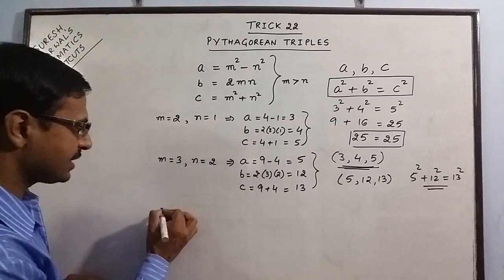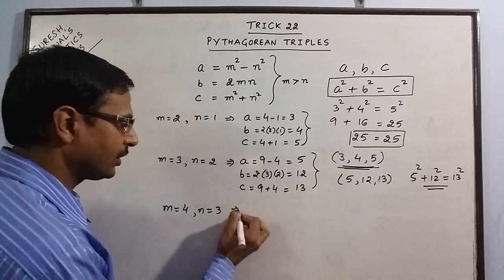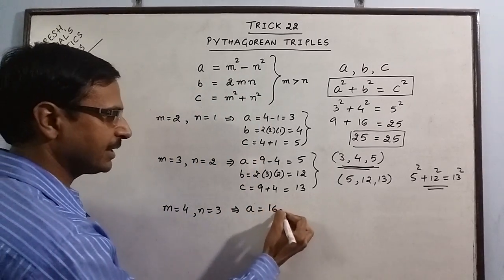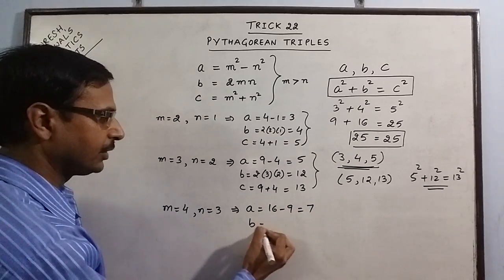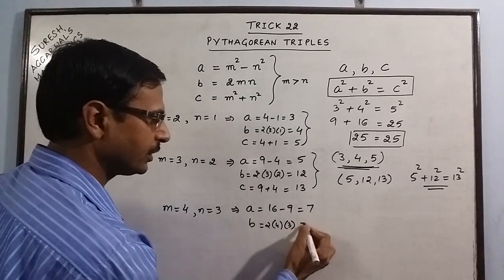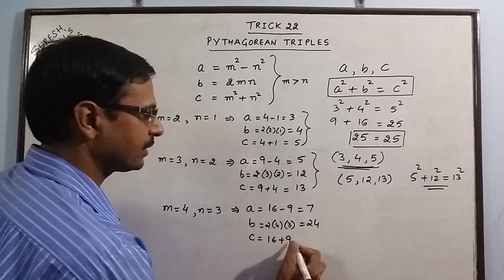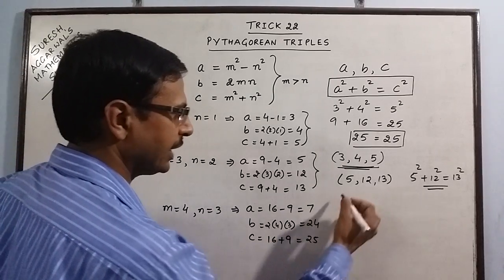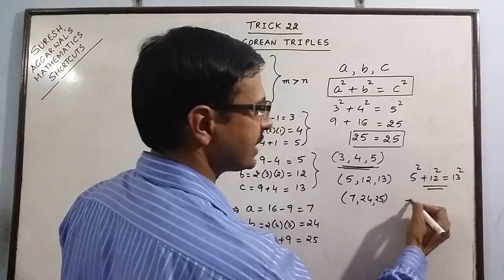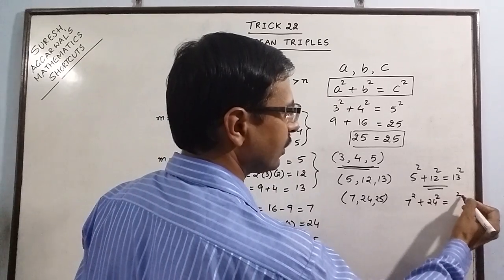Say, one more example, say I am extending it by one more, so M is equal to 4, N equal to 3. Now, we have M square minus N square, 16 minus 9, 7. 2MN, 2 into 4 into 3, that is 24. And M square plus N square, that is 25. So, yet another pair, 7, 24, 25. So, if we square 7 and add it to the square of 24, we get the square of 25.